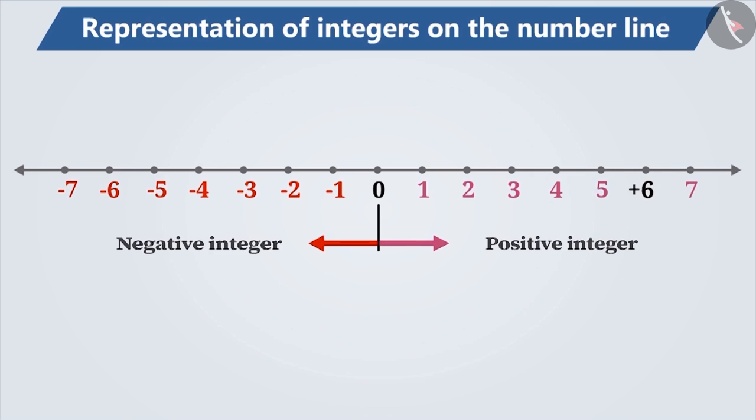For example, the position of plus 6 is marked on the number line at a distance of 6 steps to the right of 0. Similarly, the position of minus 4 is marked on the number line at a distance of 4 steps to the left of 0.